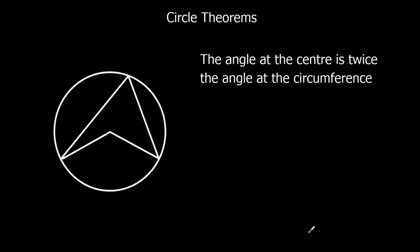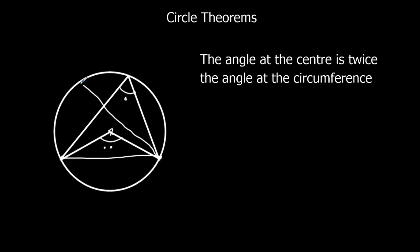The angle at the center is twice the angle at the circumference. So again, from the same points, the same chord, we've got this angle here and this angle here. The one at the center is double the one at the circumference. And again, it could be anywhere on the circumference and it'll still be double.